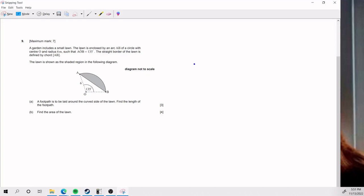All right, for number nine, we have that a garden includes a small lawn. The lawn is enclosed by an arc AB of a circle with center O and radius 6 meters, such that angle AOB is 135 degrees. The straight border of the lawn is defined by chord AB. That's this guy here. So the lawn is shown as a shaded region in the following diagram.